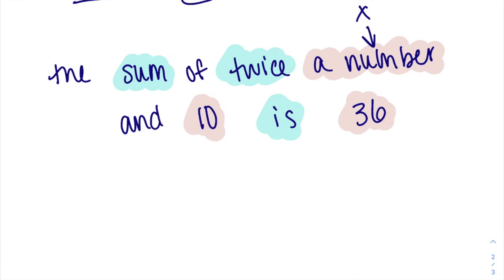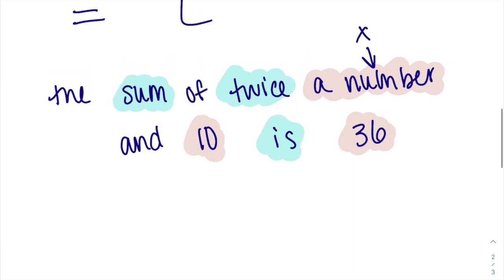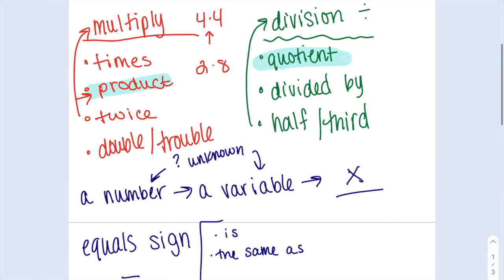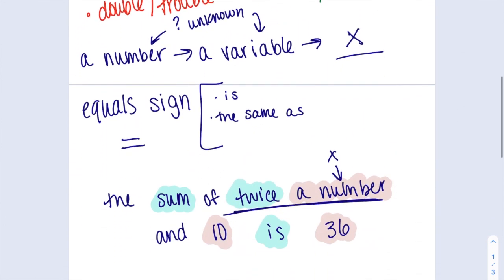The first thing I see is right next to this thing that says a number. I'm drawn to the twice part. When I hear twice, I think multiply. I am multiplying something by two. I have twice of something. So instead of just x, I have 2x or 2 times x. I have twice x.